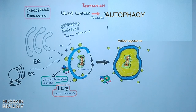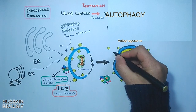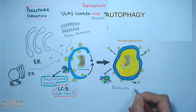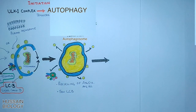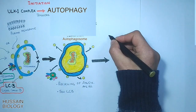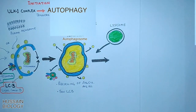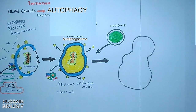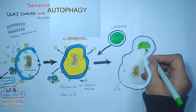In that process, some LC3 molecules leave the membrane and the ATG5–ATG16L complex is released from the membrane, as shown in the diagram. In the next step, the autophagosome fuses with the lysosome to form the autophagolysosome.